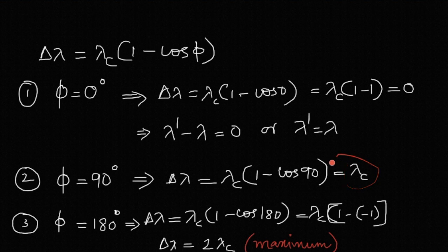For angle 180 degrees, cos 180 is minus 1. So the equation becomes 1 minus minus 1, which is 2. Therefore delta lambda equals 2 times lambda c. We get maximum change in wavelength for an angle of 180 degrees, that is twice the Compton wavelength, which comes to 4.82 picometers.